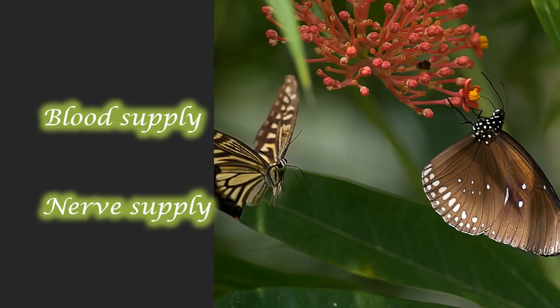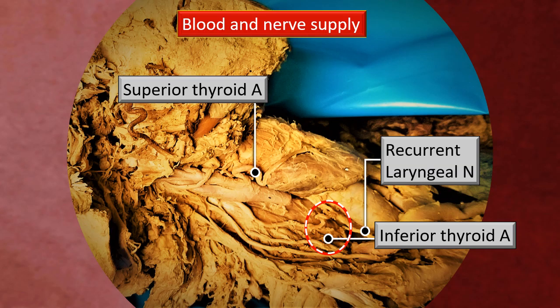We now take up blood supply and nerve supply of the thyroid gland — more importantly, the blood supply. Recapitulating: the superior thyroid artery, which is the first branch of the external carotid, descends down and can always be identified reaching the corresponding lobe exactly at the upper tip or apex of the thyroid lobe.